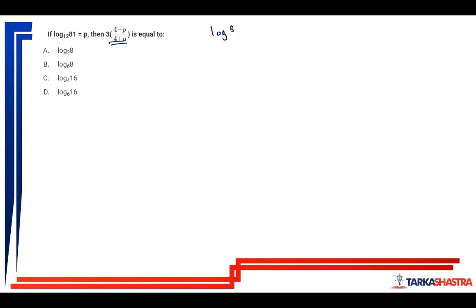So let us work on this. Log 81 to the base 12 is equal to P. So log 3 to the power 4 to the base 12 is equal to P.